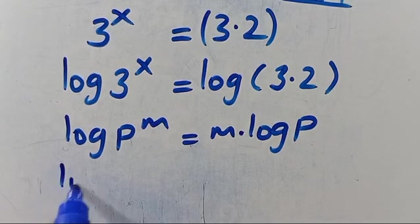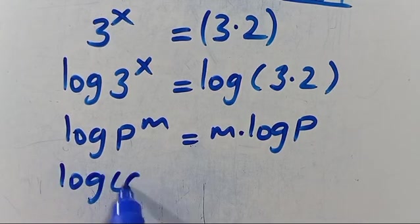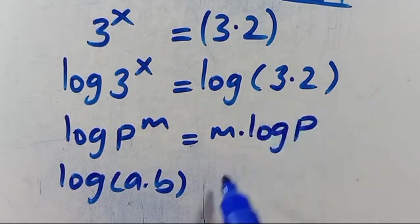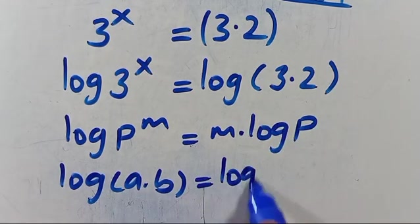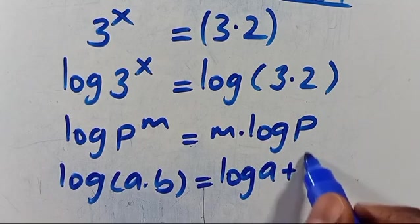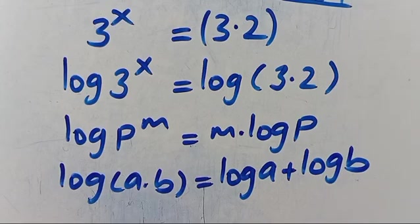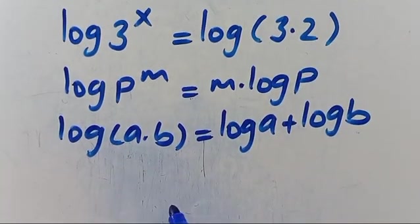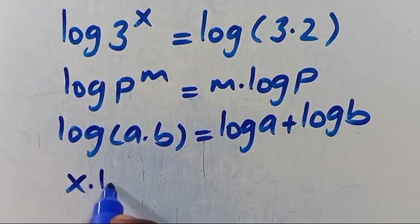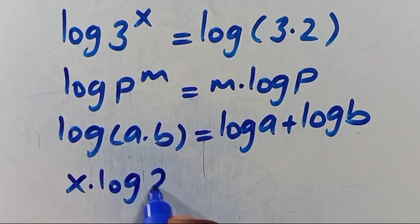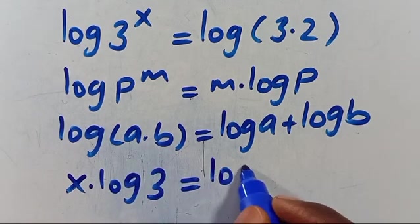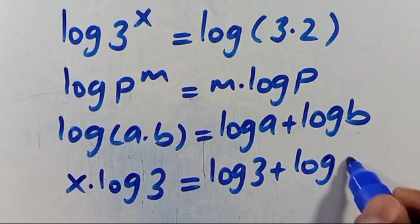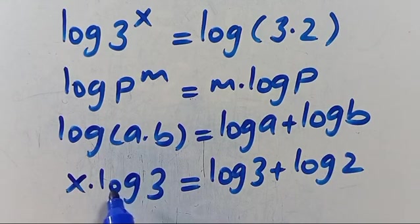And when we have log of (A times B) in parentheses, that is equivalent to log A plus log B. Applying these rules here, we are going to have X times log 3 equals log 3 plus log 2.